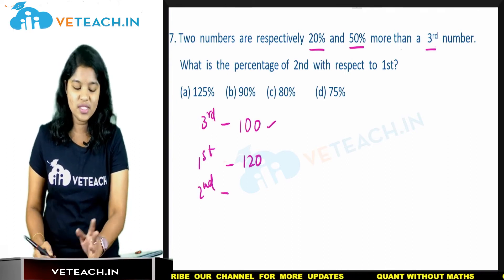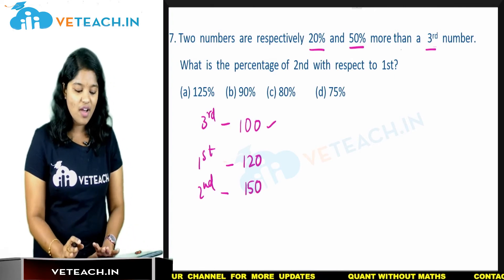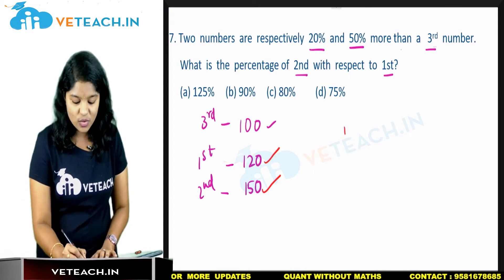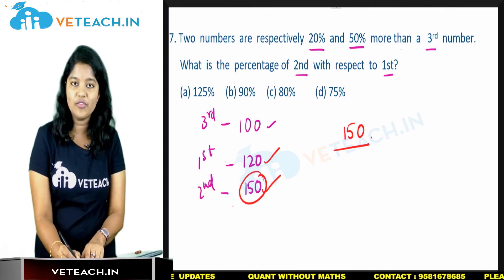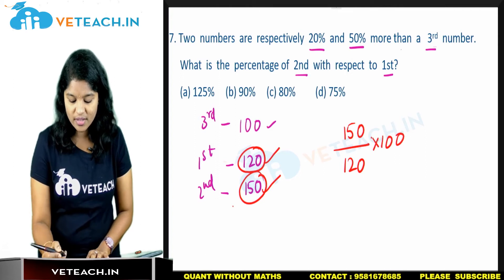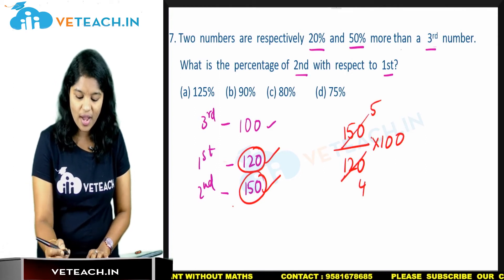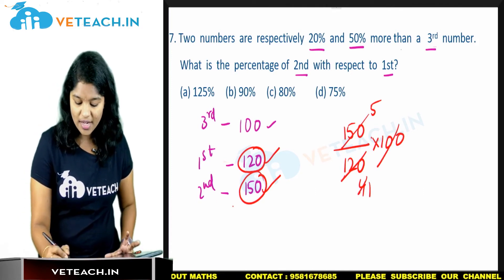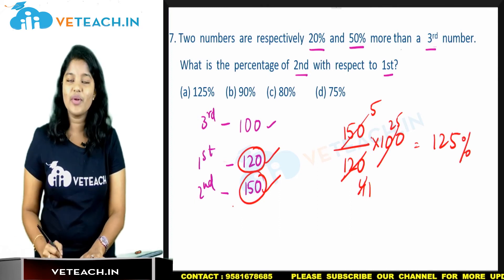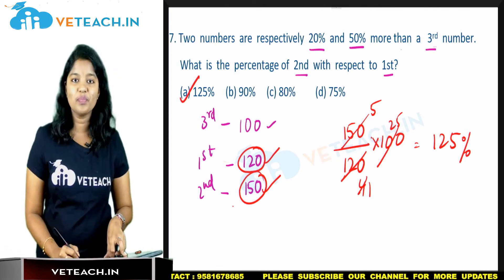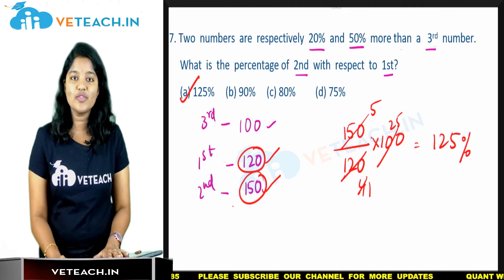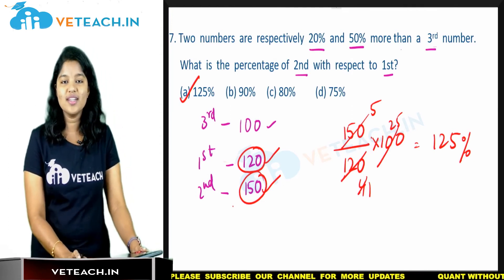Percentage of second with respect to first = 150/120 × 100 = 125%. Option A is our correct answer. We solved it in about 4 steps. Even simpler: the second number (150) is greater than the first (120), so the percentage must be greater than 100. Looking at the options — 125, 90, 80, 75 — only 125 is greater than 100. Eliminate B, C, D instantly. Option A (125%) is correct with no calculation needed.